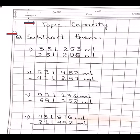Question number one, part one: 35 liter 253 ml minus 25 liter 208 ml. Students, we all know we always start addition and subtraction from right side, from ones side. 3 minus 8.